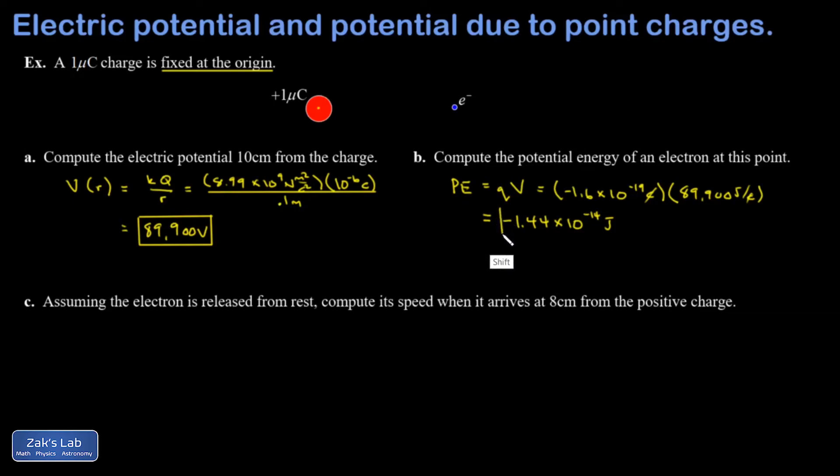Recall that when I have unlike charges, the potential energy between them is negative. And the closer they get, the more negative that becomes, which is good because when the potential energy decreases like that, I'll see the kinetic energy increase. So it makes sense.